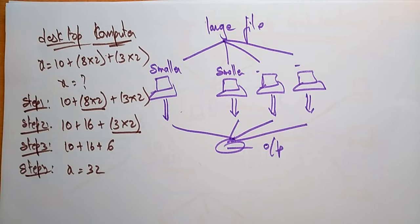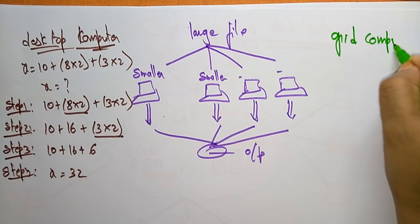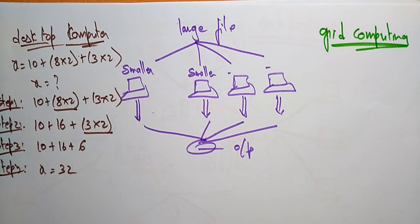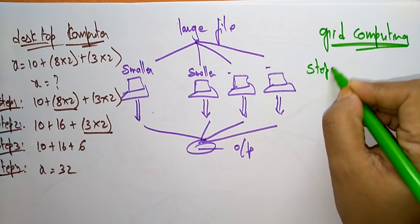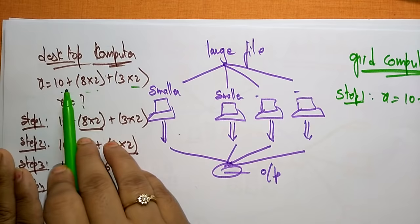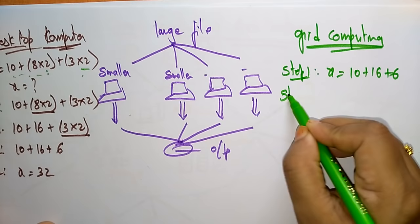With grid computing, three computers solve the equation in parallel. The expression is divided: the first system handles 10, the second handles 8×2, and the third handles 3×2. In step 1 they compute in parallel to get 10, 16, and 6. In step 2 the final result x = 32 is obtained.